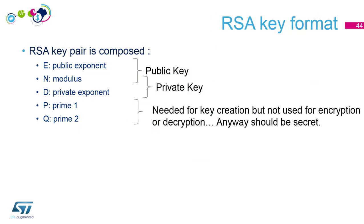An RSA key pair consists of: a public key (public exponent + modulus) and a private key (private exponent + modulus). P and Q are no longer needed for encryption/decryption but must be kept secret — if revealed along with other information, someone could derive the private exponent. Let's do a hands-on with OpenSSL to check this.